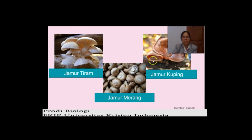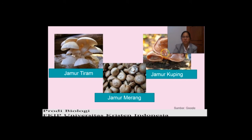Ini dia bentuk dari jamur tiram — dia seperti ada payung. Kemudian ini jamur kuping — dia seperti daun telinga, sehingga dikatakan jamur kuping — dan ada jamur merang. Ketiga jenis jamur inilah yang paling sering dibudidayakan di Indonesia sendiri.